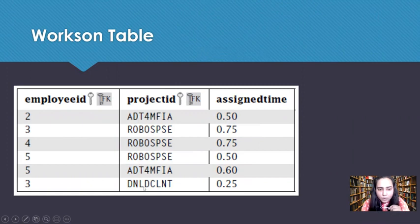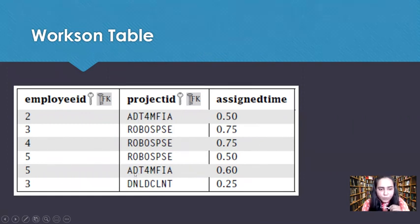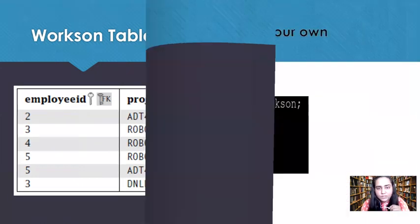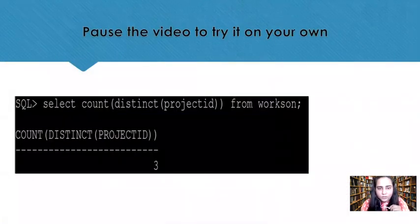In the works_on table, you can see that robo_sp_se appears three times and 84mfi appears twice. So you cannot say there are six projects being worked on — there are actually only three. If you perform the COUNT query without DISTINCT it would give you six because it simply counts non-null values. To count only distinct values, you must use the DISTINCT keyword.